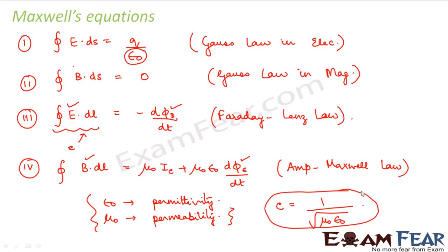We have now reached the end of Maxwell's work and Maxwell's equations. The final conclusion is that a changing electric field produces a magnetic field, and a changing magnetic field produces an electric field. Based on this, we will now proceed to understand what electromagnetic waves are.